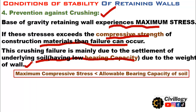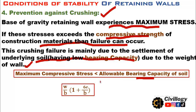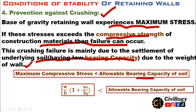So bearing capacity must be kept in mind. The condition for this stability is that the maximum compressive stress caused by the weight of the wall should be less than the allowable bearing capacity of the soil. The formula is W/B × (1 + 6E/B) should be less than the allowable bearing capacity. These are the conditions which must be fulfilled to avoid failure of retaining walls.